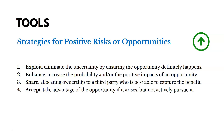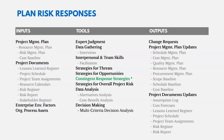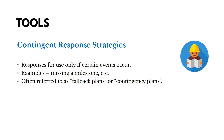Strategies for positive risks or opportunities include: exploit — eliminating uncertainty by ensuring the opportunity definitely happens; enhance — increasing the probability and/or positive impacts; share — allocating ownership to a third party so that working together makes the opportunity more likely to be realized; and accept — taking advantage of the opportunity if it arises but not actively pursuing it. There are also contingent response strategies — responses only triggered if a certain event occurs — essentially a fallback plan.